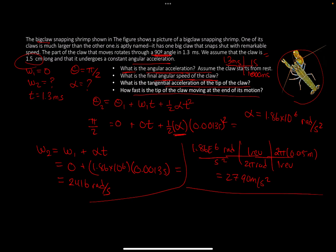How fast is the tip of the claw moving at the end of its motion? Convert the radians per second to meters per second. So 2416 radians per second, and following the same process: 2π radians is one revolution, and one revolution is 2π × 0.015 meters. The 2π terms cancel, so you take 2416 × 0.015 and get 36 meters per second.